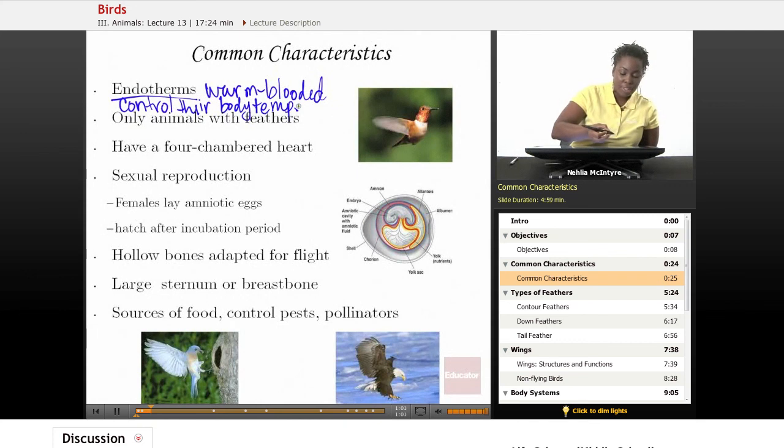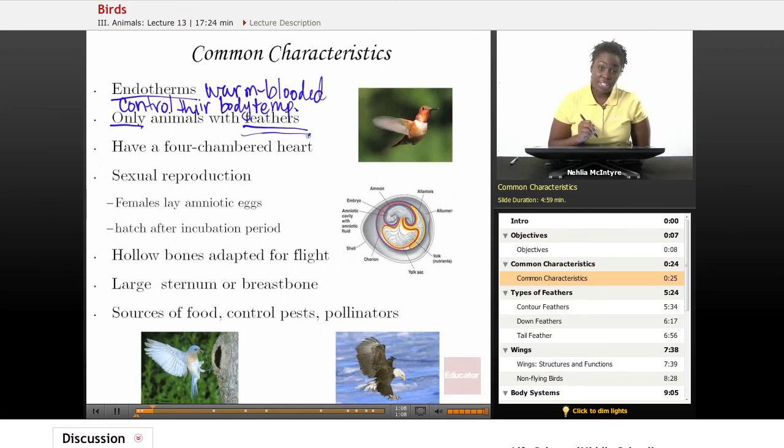Also, birds are the only animals in the animal kingdom that have feathers. Feathers are the distinguishing feature or characteristic of all birds. So if you are an animal with feathers, you are characterized as a bird.